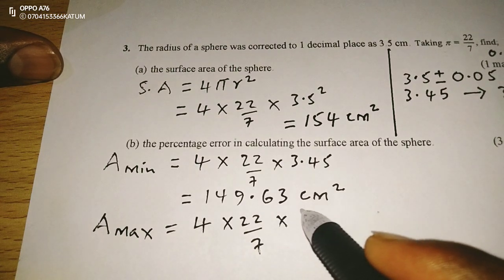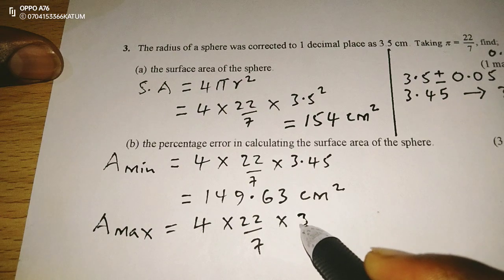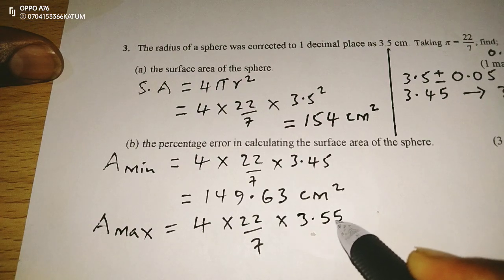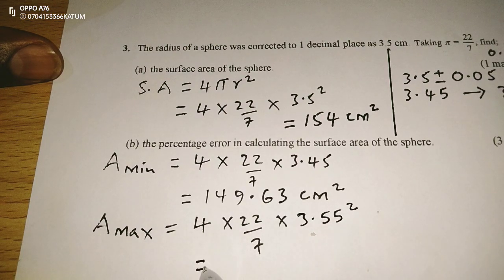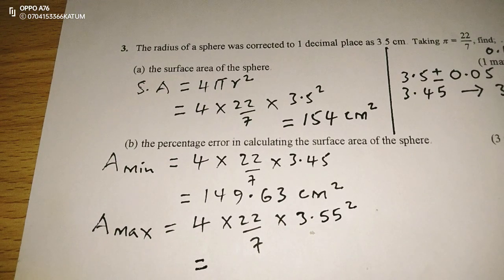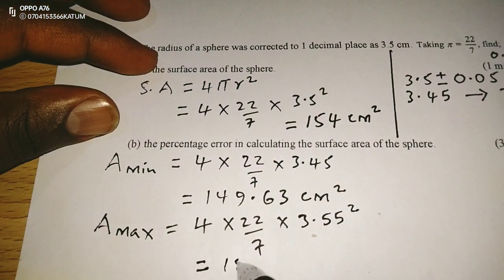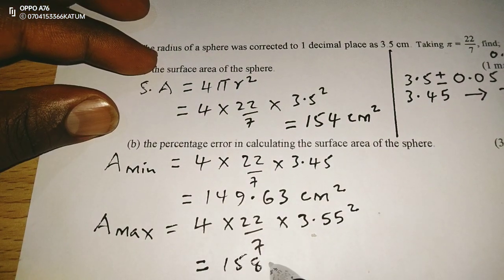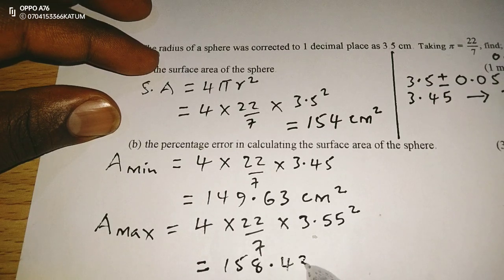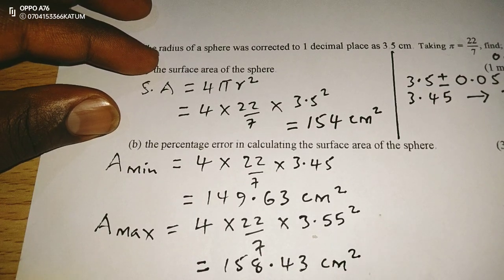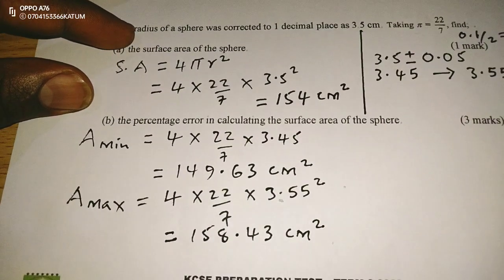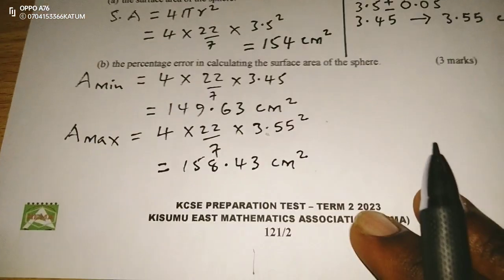So this is going to give us 4 by 22 over 7 multiplied by 3.55 squared. So 5, 5 squared will give us 158.43 square centimeters.